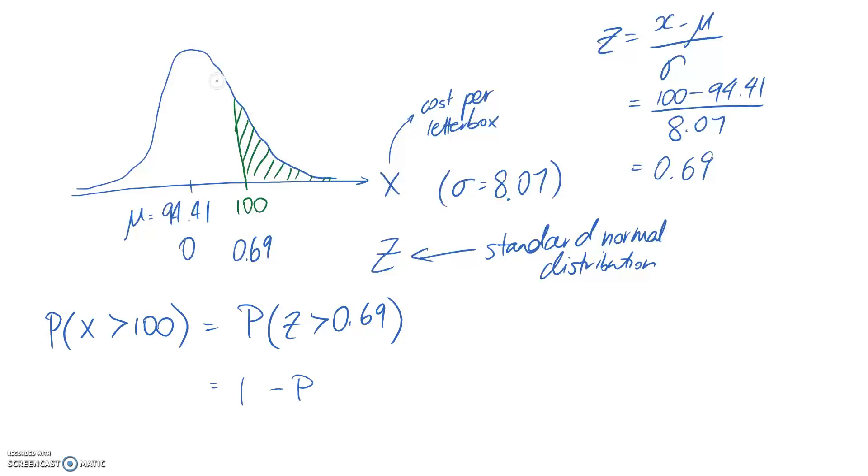The area inside here we could describe as z is now less than 0.69. All I've done is swap this over so we get the opposite section.